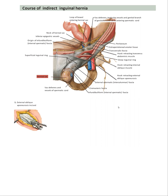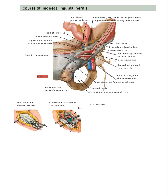The external oblique aponeurosis will be incised after skin, Camper's and Scarpa's fascias. Then the cremasteric fascia is opened and the sac will be identified. As you see here, the yellow structure will be the sac, and then the sac will be dissected and separated, as you see here.